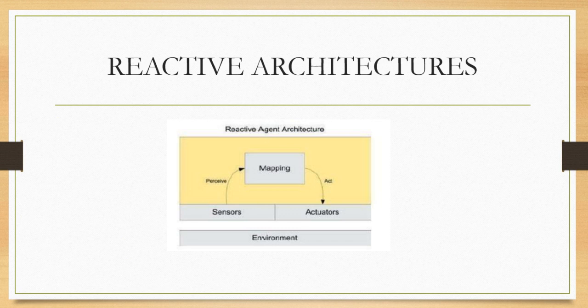The first is reactive architecture. Reactive architecture is a simple architecture for agents. It will sense the environment, get the data, map it, and then give the output through the actuators to the environment. It can solve only the simplest architectures.